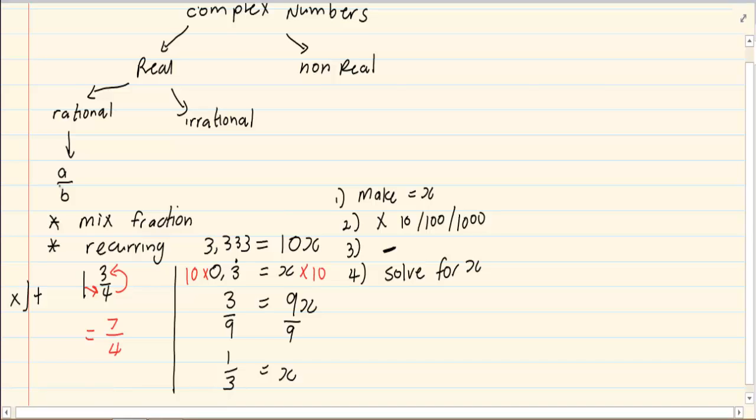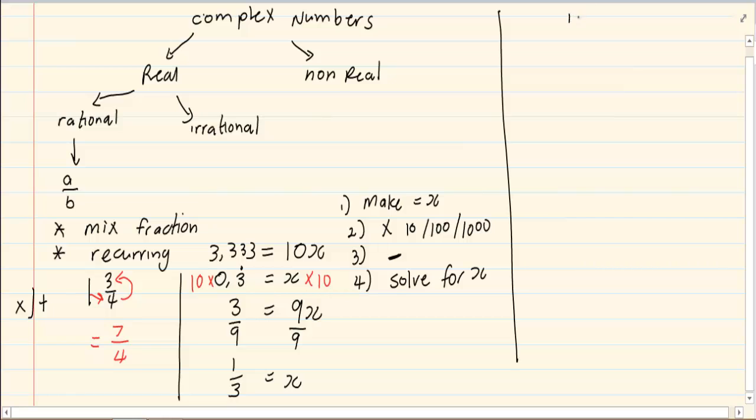This proves that recurring fractions can be written in the form of a over b. Next we are doing rounding off.